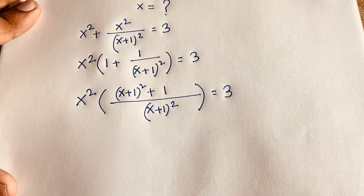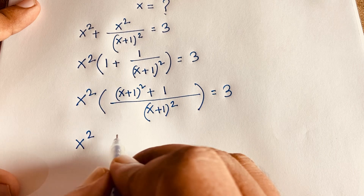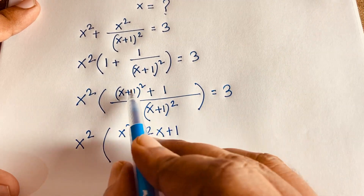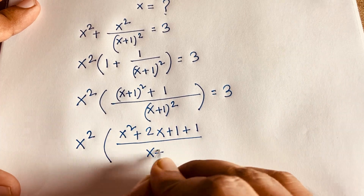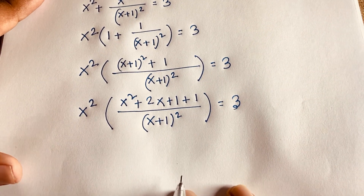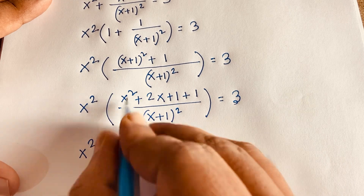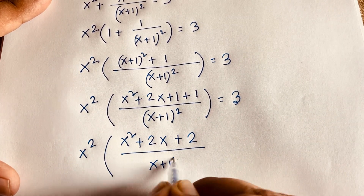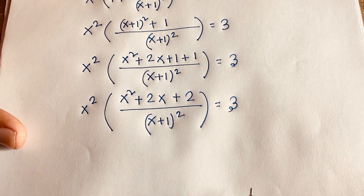Now in this expression, (x+1) whole squared expands to x squared plus 2x plus 1, using the rule (a+b)² = a² + 2ab + b². So the expression becomes x squared times (x squared + 2x + 1 + 1) over (x+1) squared, which simplifies to x squared + 2x plus 2 over (x+1) squared equals 3.